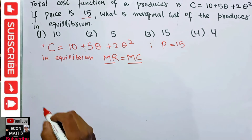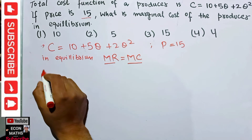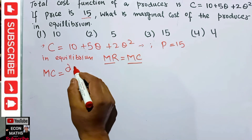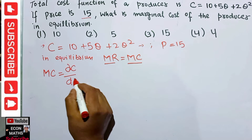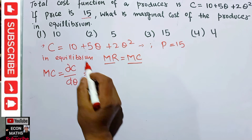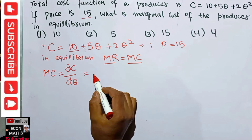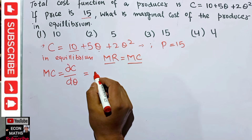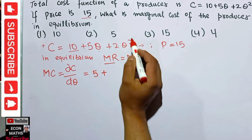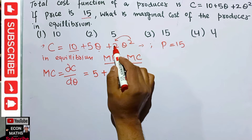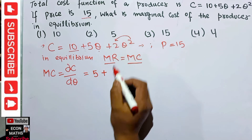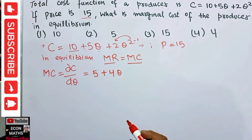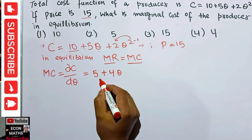From the total cost function, we can easily calculate marginal cost. Marginal cost is simply the derivative of the cost function with respect to quantity, that is dC/dq. Differentiating: the derivative of the constant 10 is 0, the derivative of 5q is 5, and 2q² becomes 4q. So marginal cost = 5 + 4q.